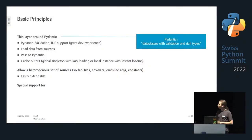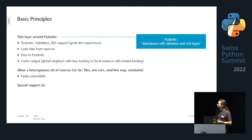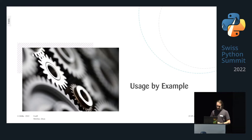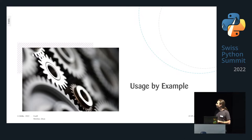ConfSet allows for a heterogeneous set of sources — environment variables, command line arguments, constants, and more. It's easily extendable: if you have keys in Azure Key Vault, just write an extension. It also has special support for multiple environments and testing. Rather than going through a programmatic setup, let's look at how to use it by examples.